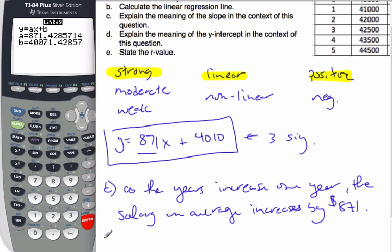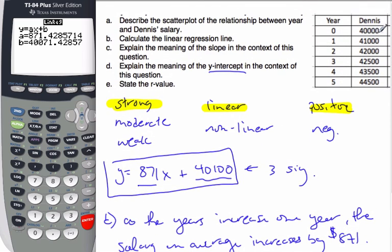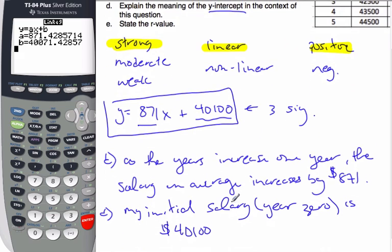D part says explain the meaning of the y-intercept in the context of the question. This is the y-intercept. What the y-intercept means is my initial salary. So when years are zero, year zero is 40,100 dollars to three significant figures. Often, in this case, I know what my starting salary is, 40,000, and this is what the model says. We know that they're not the same. Even a lot of times, this value doesn't even make sense. Sometimes it might be like a negative value, which wouldn't make sense for salary. The y-intercept is often nonsensical, but it still means the initial salary in this case.